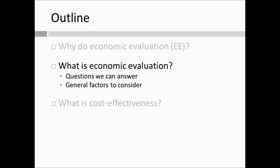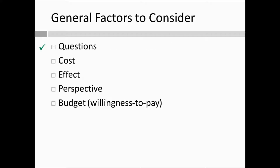To elaborate on the third question, I'll link it to the general factors you may want to consider when thinking about including an economic evaluation in your grant submission. The first factor we already talked about is the question — are the questions that economic evaluation can answer something that you or your stakeholder want to know? If yes, move on to the second factor. In general, the factors you may want to consider include: cost, effect, perspective, and budget or willingness to pay.